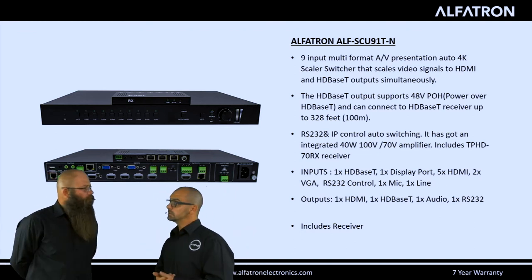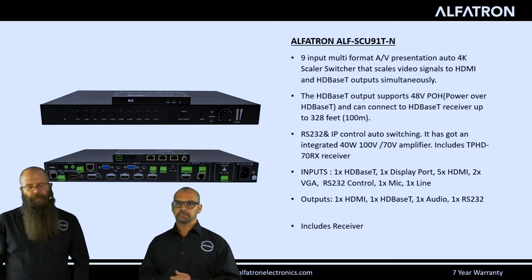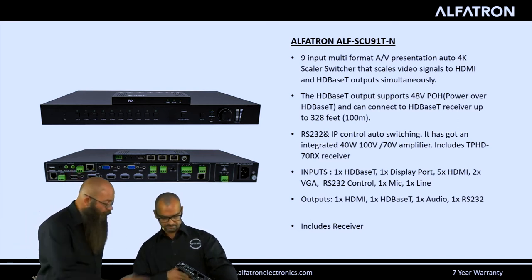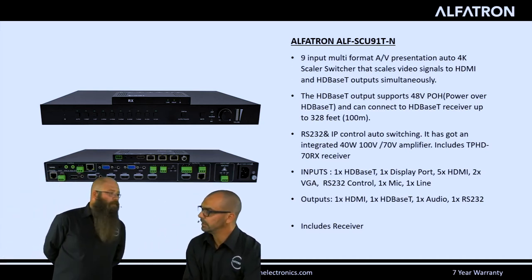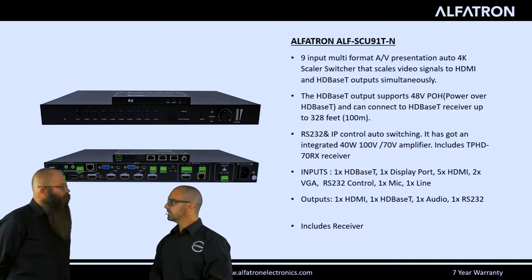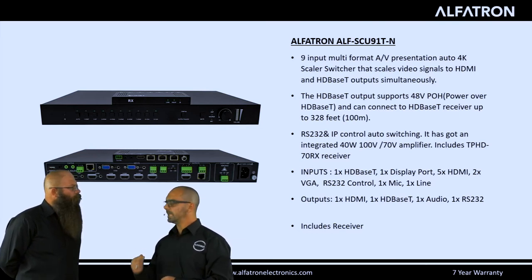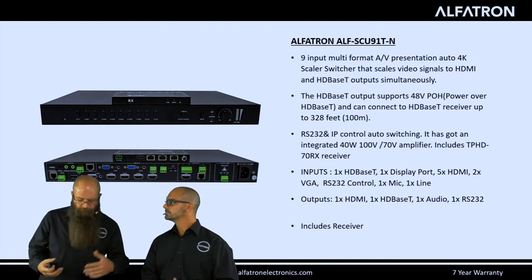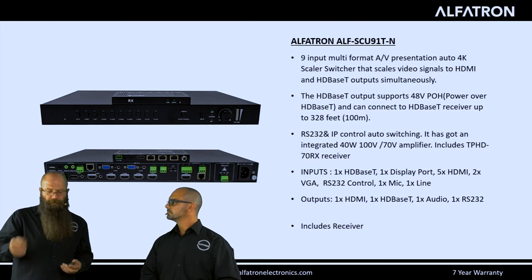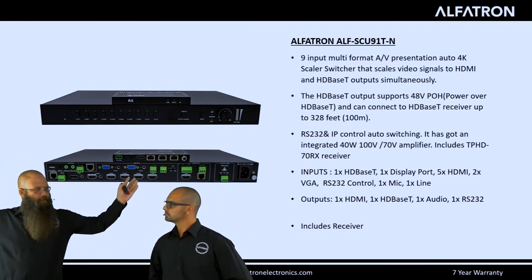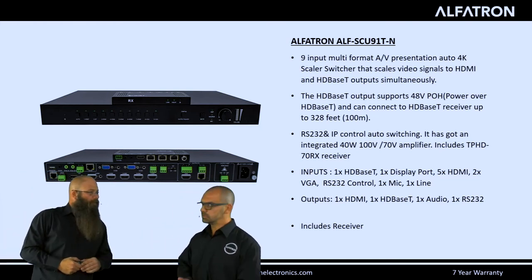As an example in a house of worship, a presenter at the pulpit can have a single HDMI input sent via HDBaseT back to the SCU91 in the control room — no extra boxes needed. You want the end user to have a single input with no complicated cables, and everything else is handled in the control room. The unit is rack mountable at 1U. In summary, the SCU91 has an HDBaseT input, a DisplayPort input, five HDMI and two VGA inputs, and simultaneously outputs HDMI and HDBaseT with a receiver included for up to 70 meters or 230 feet.